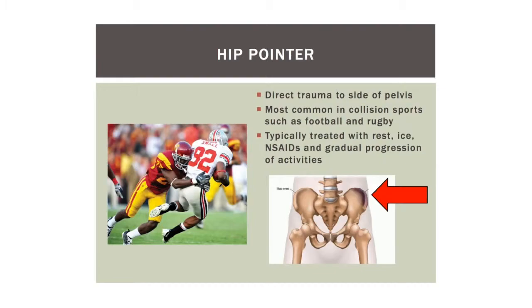A hip pointer — especially during football season — is a direct contusion or injury to the side of the pelvis, seen in sports like football, rugby, and other collision sports. Typical treatment is rest, anti-inflammatories, and gradual progression of activities. If there's a deformity in the pelvis, extreme swelling, or difficulty weight-bearing, x-rays and further workup are needed. But a typical hip pointer is just treated symptomatically.